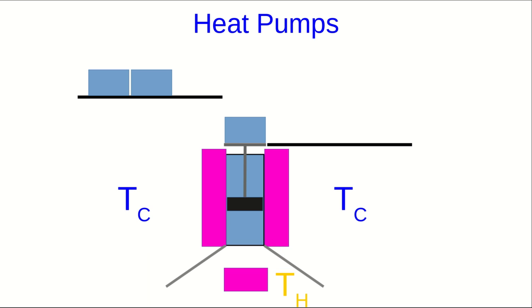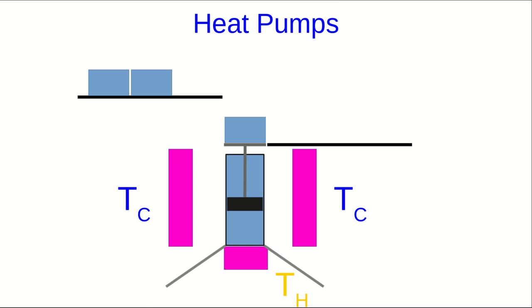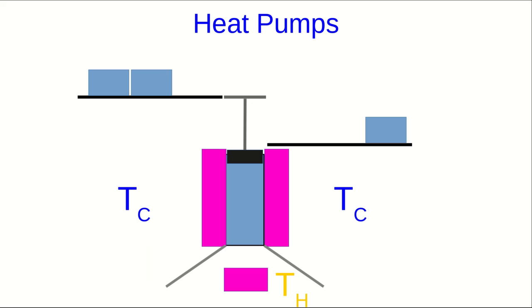We now wait until it cools down, then remove the insulation and put the insulation on the hot side, and remove the mass, which makes the air expand and cool, and so it'll accept heat from the cold part. And we just repeat that.